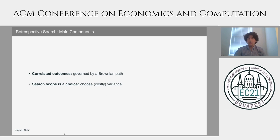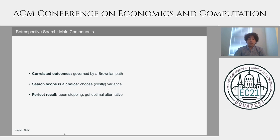The correlation in this model is going to be captured by a Brownian path, and the search scope is going to be captured by a choice of costly variance. In addition, we are going to assume that there is going to be perfect recall in the sense that once I actually decide I have concluded my search, I can go back and choose the best option that was available to me.